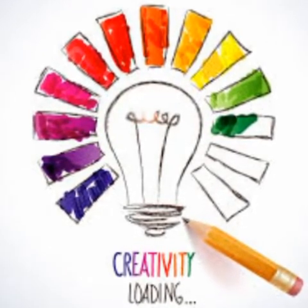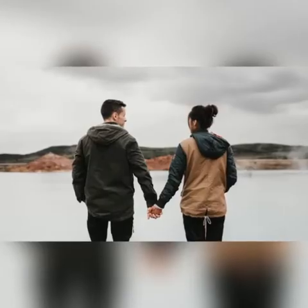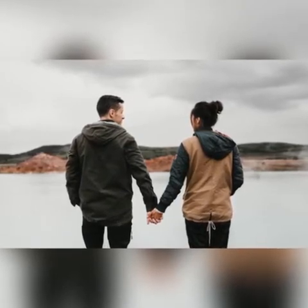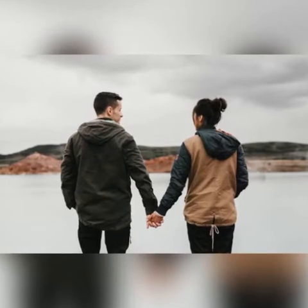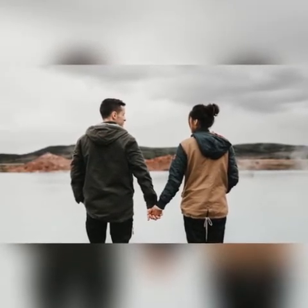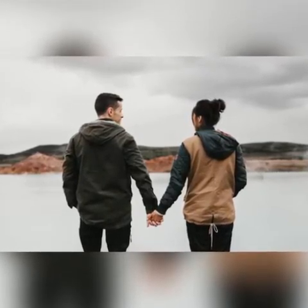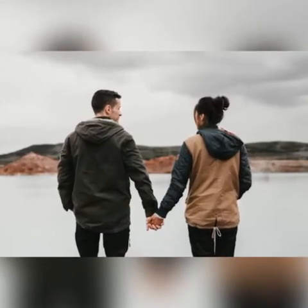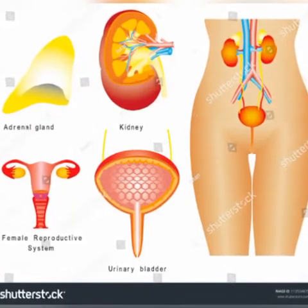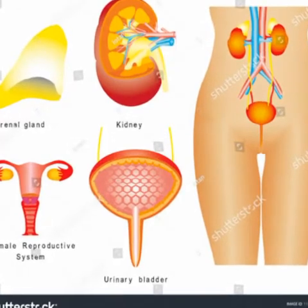Now we will see what are the imbalances of the Sacral Chakra. The first one is sexual obsession or lack of sexual desire — this can go to both extremes. For example, someone may have excessive sexual obsession or totally lack sexual desire. Nowadays it happens with couples who are so much indulged in mobile phones, living in a fantasy world and losing their sexual desires with their partners.